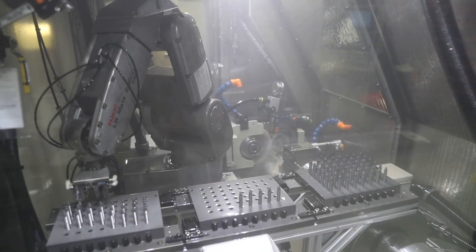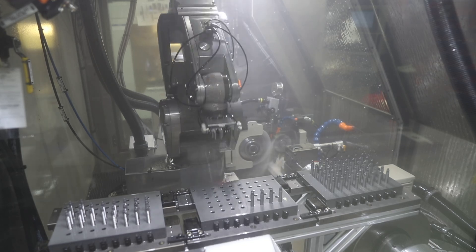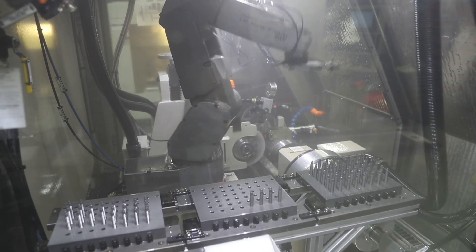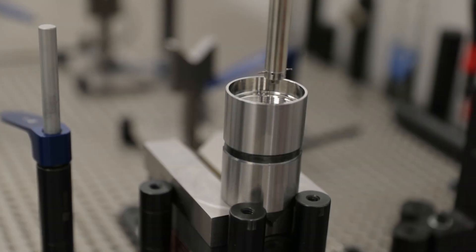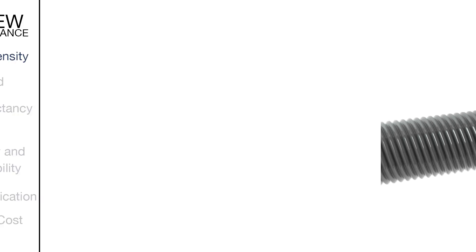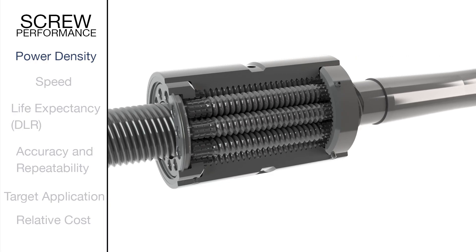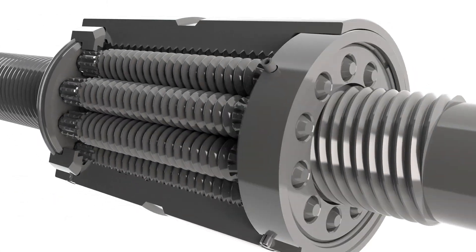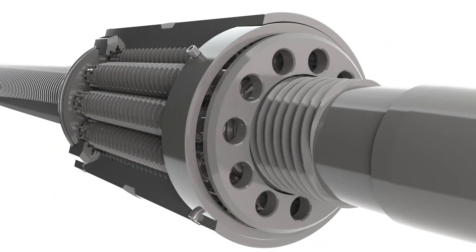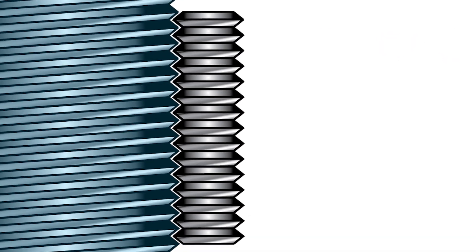Two of the most common screw technologies used in industrial linear actuators are ball screws and roller screws. It is important to understand the benefits and limitations of both technologies. The power density of a roller screw enables more power in a smaller package than a comparably sized ball screw.